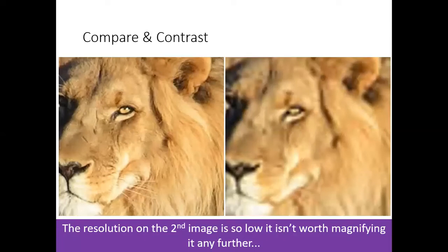There's no point in zooming in on that lion on the right any further because the resolution — the clarity of the image — is so low that if we zoom in it's just going to go fuzzy. The one on the left has a higher quality image, a higher resolution, so we could zoom in on that one a little bit further and we would see more detail as we zoomed in. So resolution is to do with fuzziness, the ability to see detail, and you magnify as far as it's worthwhile doing.